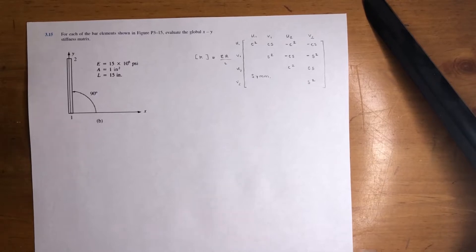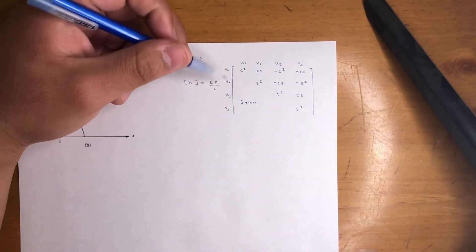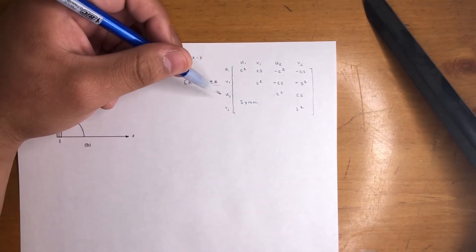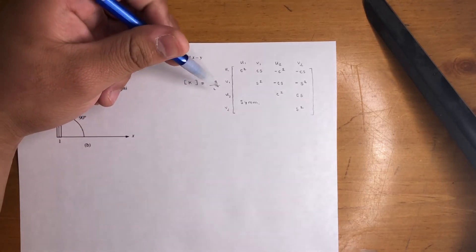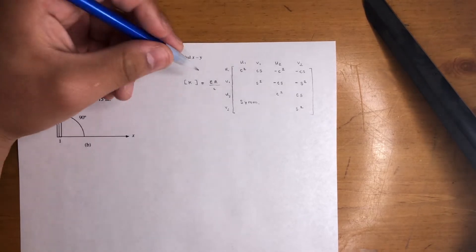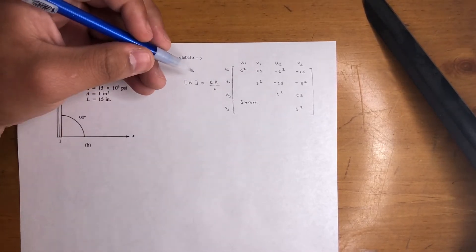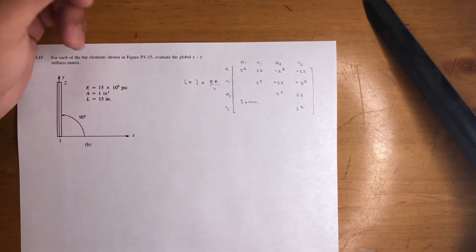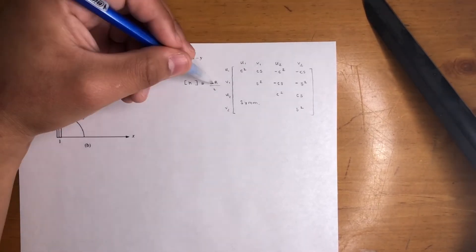The goal for these problems is finding the global XY stiffness matrix. This is the formula — there's a lot of theory behind it: transformation matrices, transposing them, all that. It's quite involved, but this formula is all you'll need for the exam. Unless you're really interested, you might want to look at the theory, but the key is they give us EA over L, so it's straightforward.